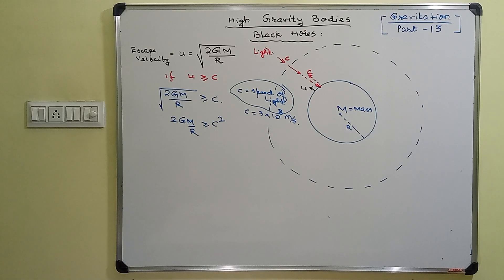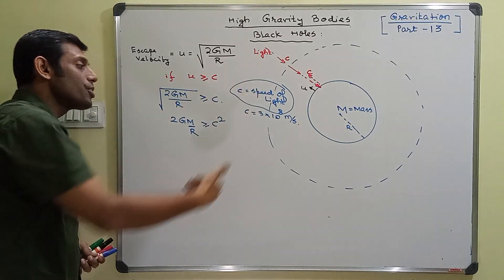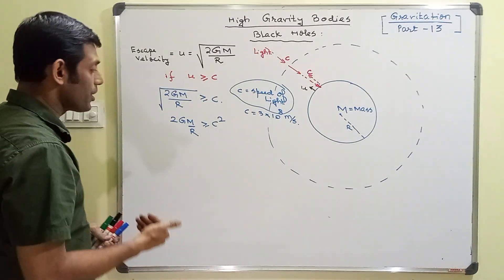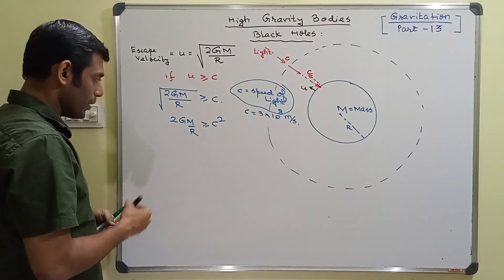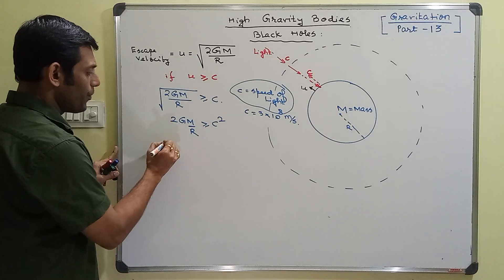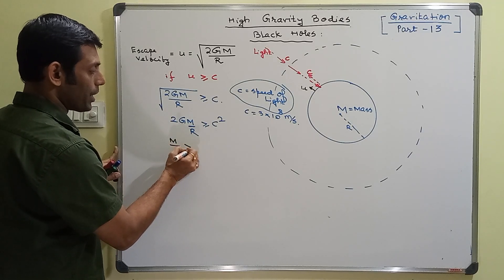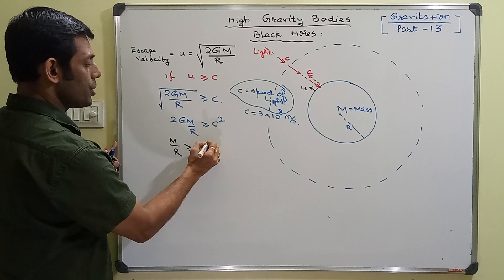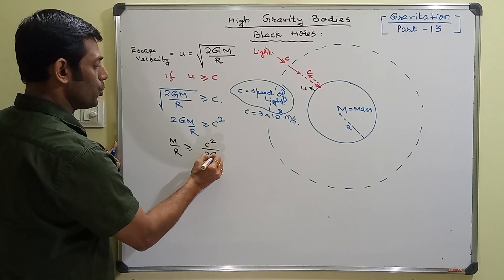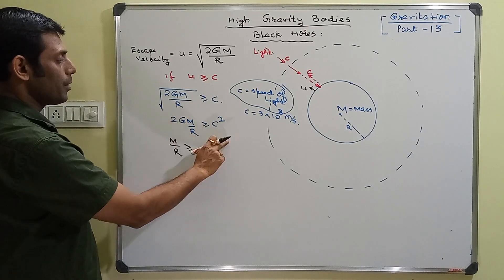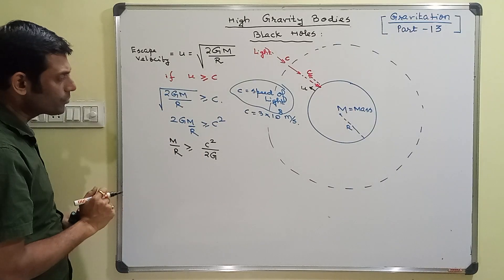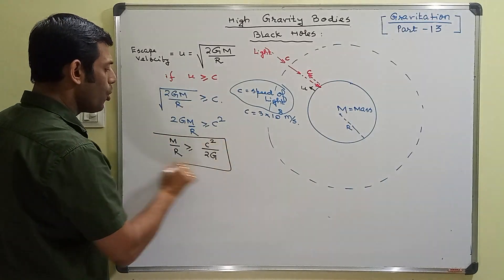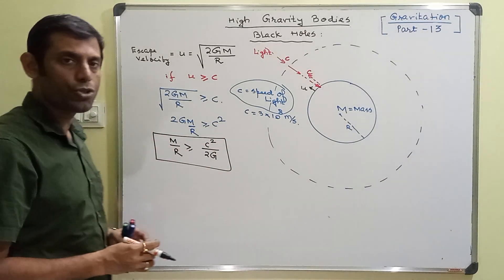Your calculation of c square is 9 times 10 to the power 16 meters square per second square, and it's a tremendous value. Now see this: if your mass by radius ratio exceeds c square by 2G, then your escape is almost impossible.